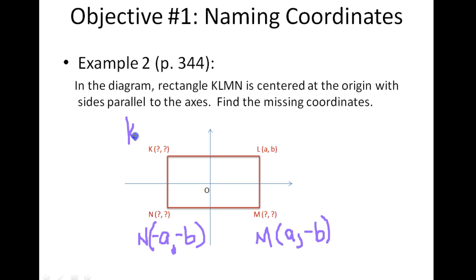And lastly, to find K, we do the same thing. We know K is going to share the same x-axis as N. They both hit the x-axis at negative A. And it's going to have the same y-coordinate as L does. Its y-coordinate will be a positive B because both K and L lie above the origin.